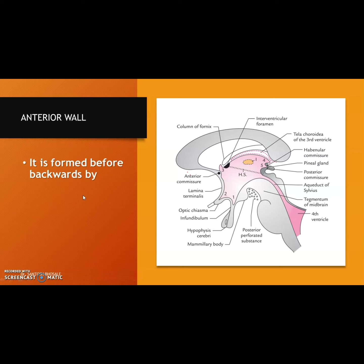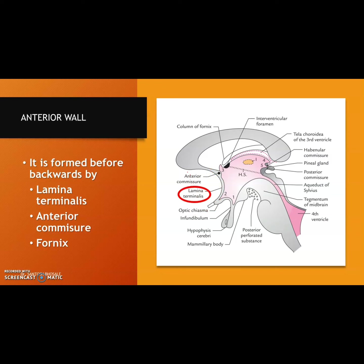The anterior wall is formed, from before backwards, by: the lamina terminalis — the rostral end of the central canal of the primitive neural tube during development; the anterior commissure — one of the commissure fibers connecting the orbital surface of both frontal lobes; and the anterior column of the fornix — the projection fibers of the hippocampus.